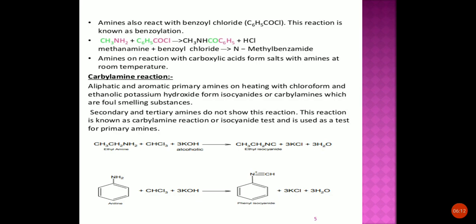The next reaction is the carbylamine reaction. Aliphatic and aromatic primary amines, on heating with chloroform (CHCl₃) and ethanolic potassium hydroxide (ethanolic KOH), form isocyanides — also called carbylamines — which are foul-smelling, poisonous substances. This is known as the carbylamine reaction, and it serves as a test for primary amines.